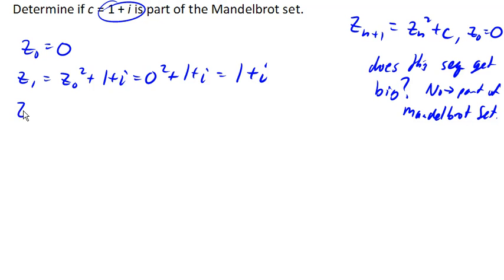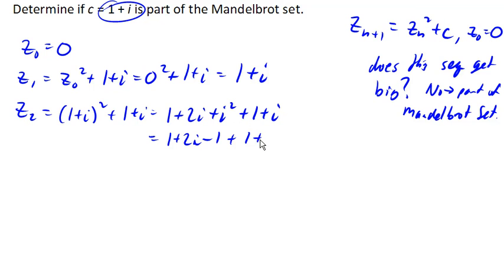z_2 would be z_1 squared plus 1 plus i. That'd be (1+i)^2 plus 1 plus i equals 1 plus 2i plus i squared plus 1 plus i. That is 1 plus 2i minus 1 plus 1 plus i, which equals 1 plus 3i.